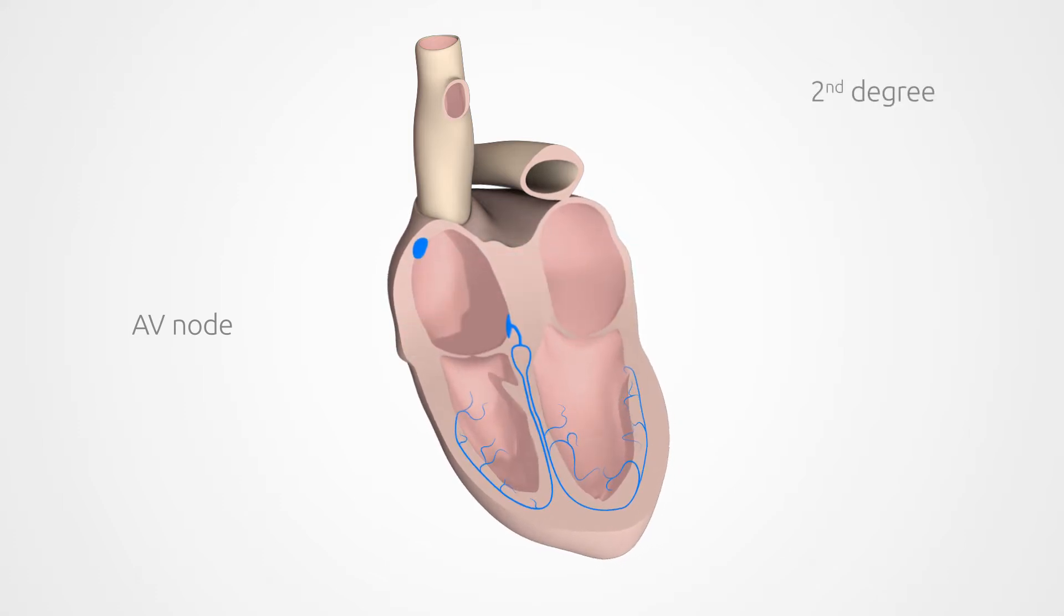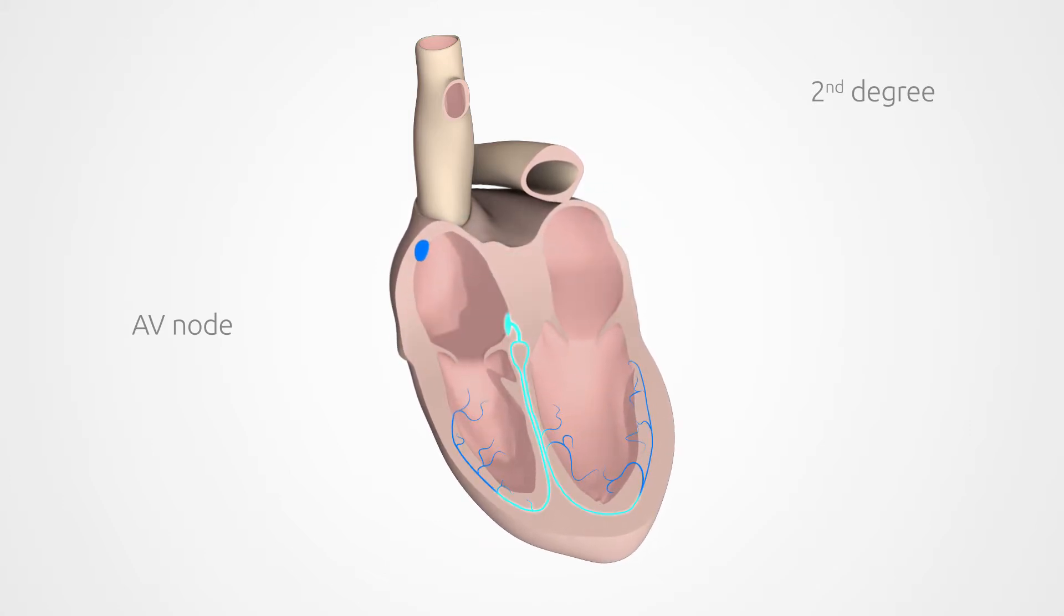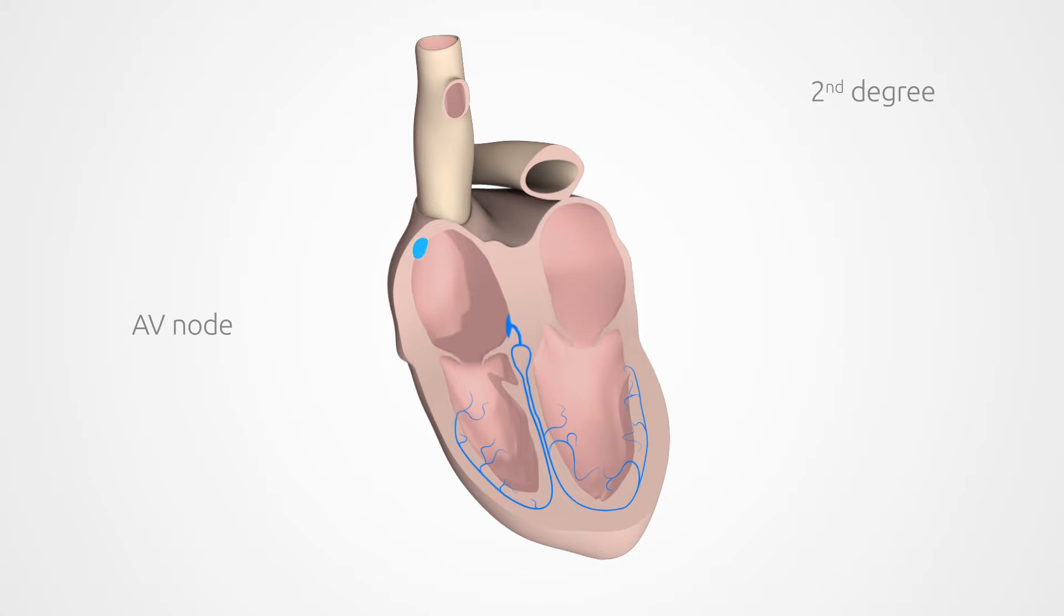In second-degree AV-Block, the signals aren't passed on at all for short amounts of time. As a result, not all of the signals from the atria arrive at the ventricles. The heart regularly skips a beat, for instance every fourth beat.